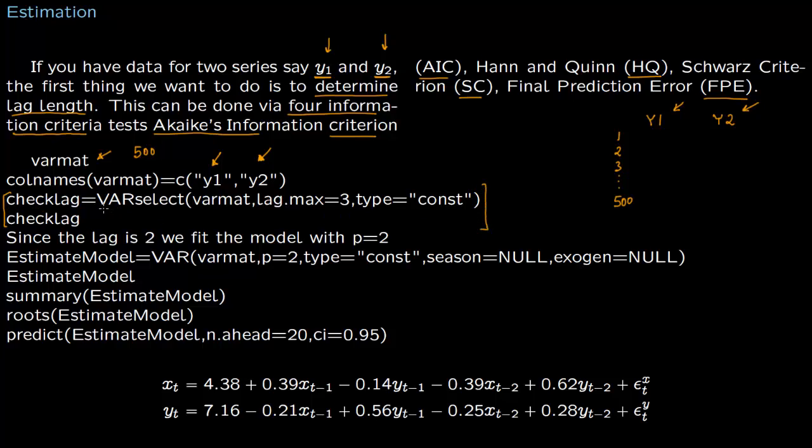This is the check lag. It is done by VARselect and this check lag will spit out criterion AIC, Hann Quinn, Schwarz criterion, and final prediction error. Let us see this and we will find that the lag is 2.